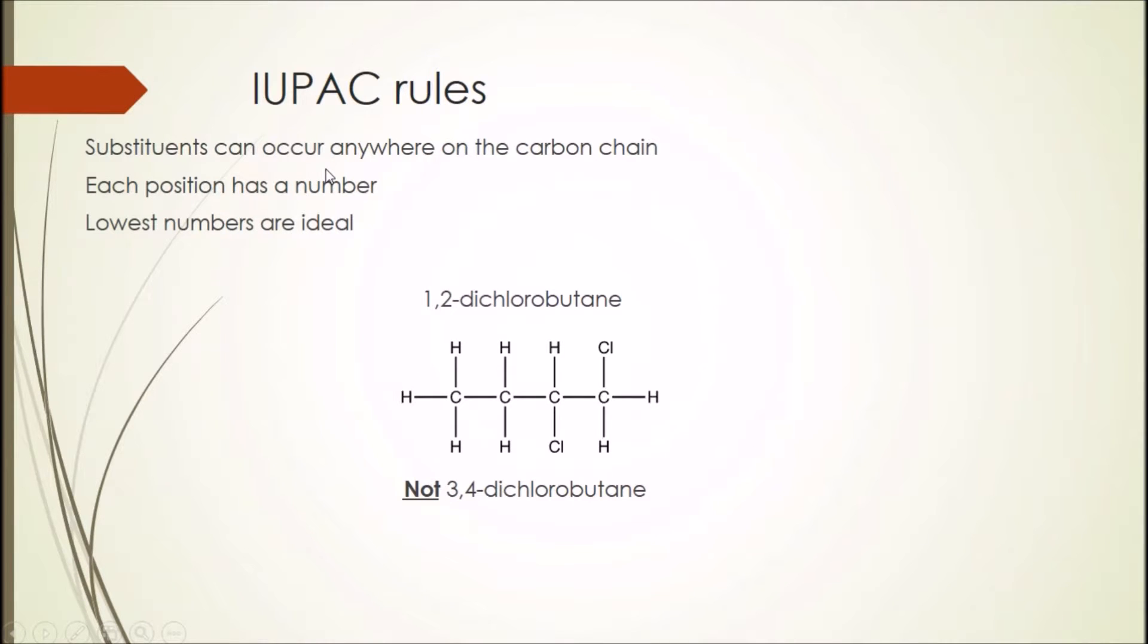The functional group can be attached to any carbon along the chain. When naming the compound, the carbons are numbered from one end of the chain to the other in the direction where the functional group is on the lowest number carbon. So for example, in this compound, dichlorobutane, if you're numbering the carbons from the left, the halogens are on the third and the fourth carbon. But if we number them from the right, then the halogens are on the first and the second carbon. One and two are lower than three and four, so the compound is named 1,2-dichlorobutane. Make sure to put a dash between numbers and letters when writing compound names.